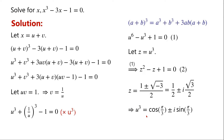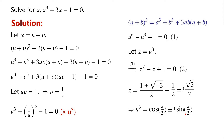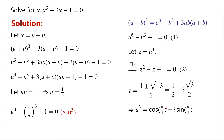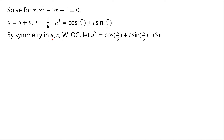So u³ equals cos(π/3) ± i·sin(π/3), since cos(π/3) equals 1/2 and sin(π/3) equals √3/2. By symmetry in u and v, without loss of generality, we take u³ equals cos(π/3) plus i·sin(π/3), and then v³ equals cos(π/3) minus i·sin(π/3).